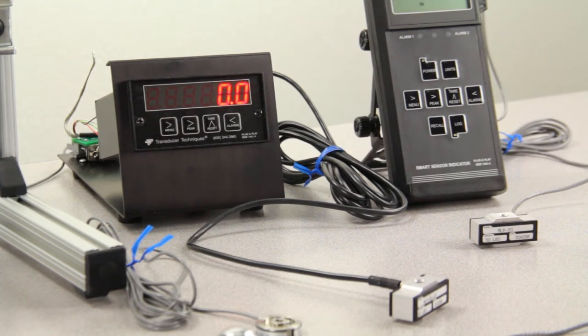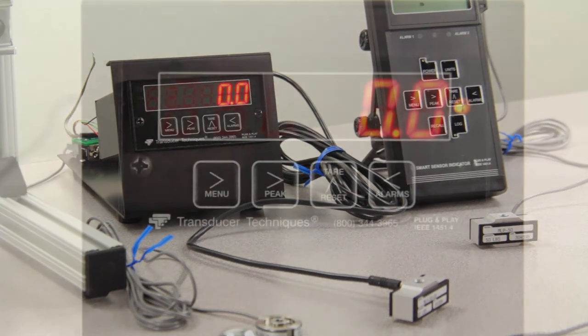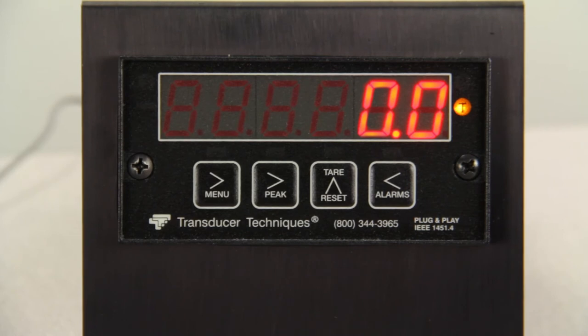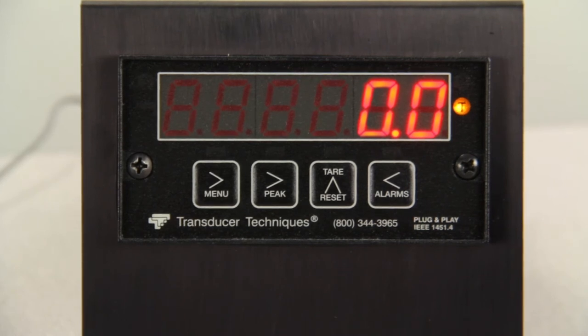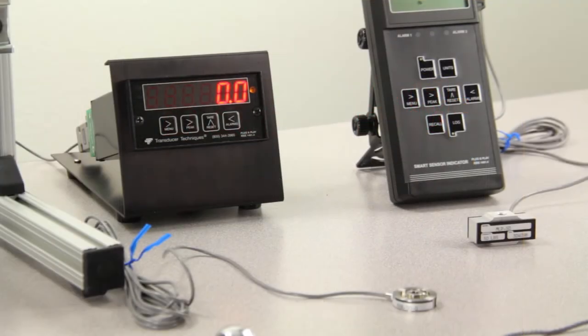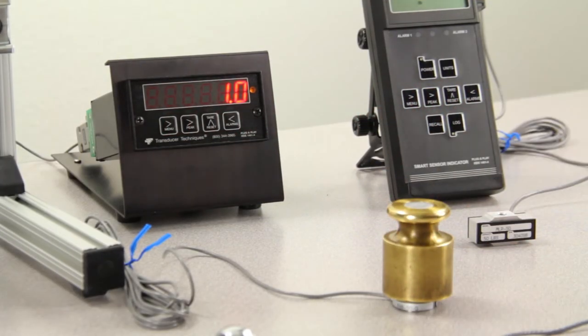Now let's do the same test with the smart plug-and-play option. The yellow light on the right hand corner is indicating you have a smart plug-and-play load cell connected. Let's put that same 1 pound weight on the load cell. Notice the meter's reading 1 pound. You're calibrated and ready for use.